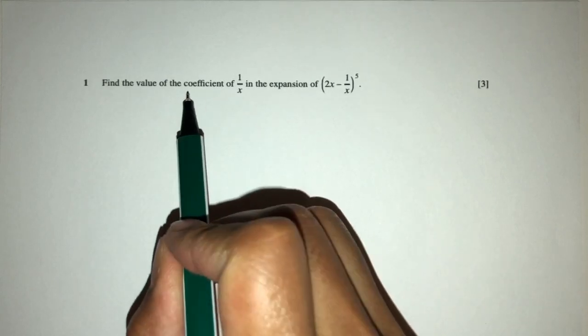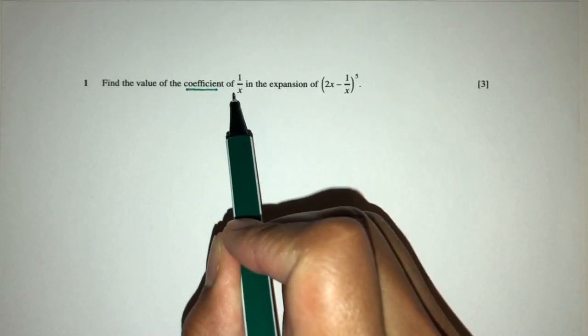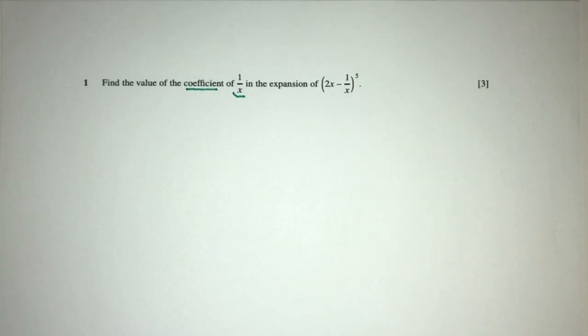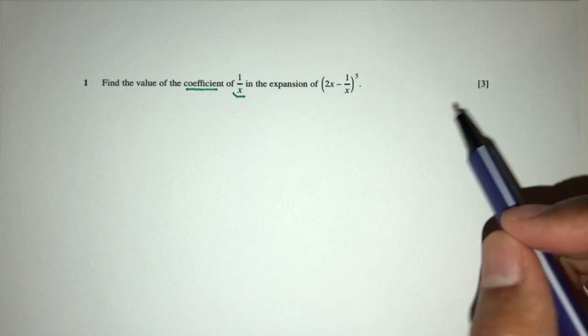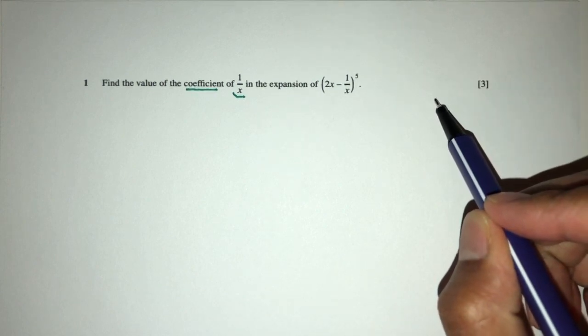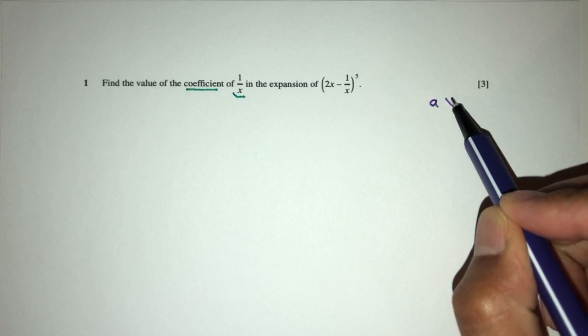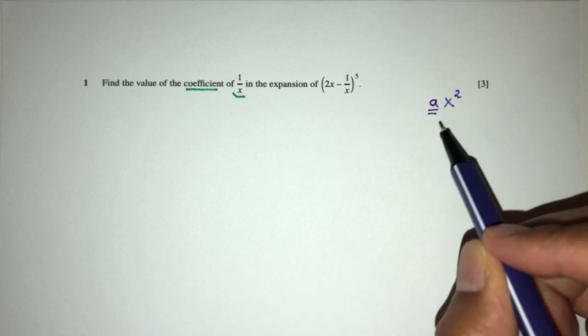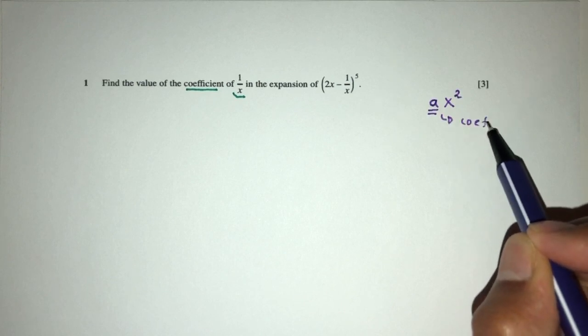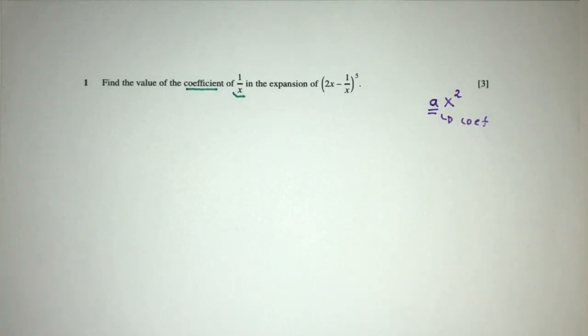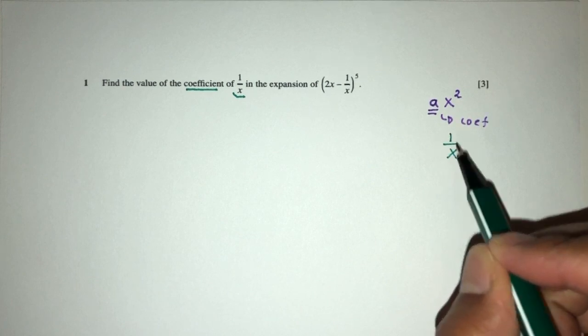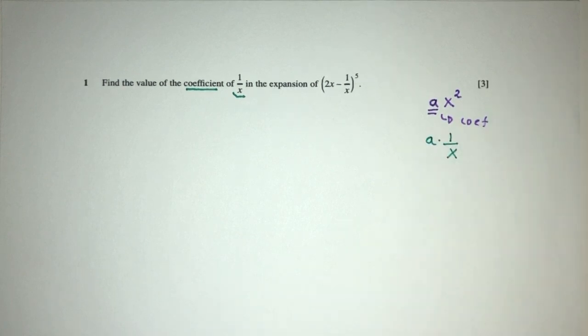So here we have to find the value of the coefficient of 1 over x in this expansion. We have to understand what is the coefficient of 1 over x. For example, if I ask you for the coefficient of x squared, the value in front of x squared will be called the coefficient of x squared. Same thing, the coefficient of 1 over x is simply the value in front of 1 over x.